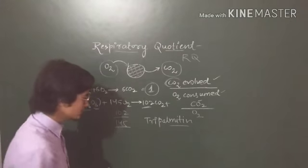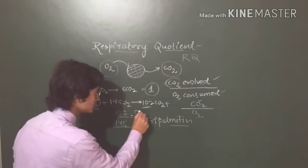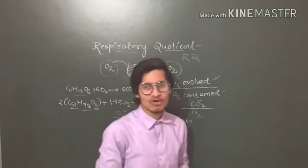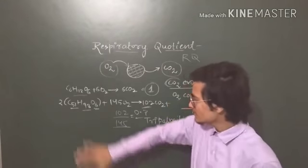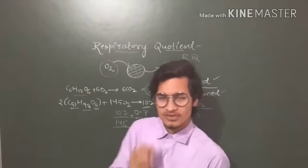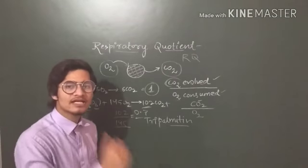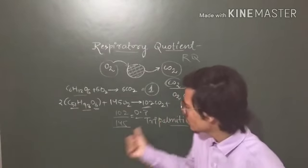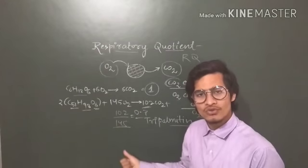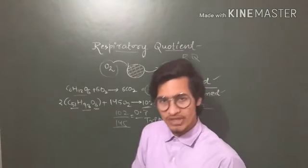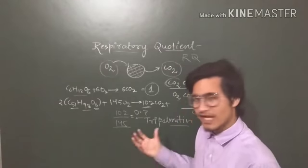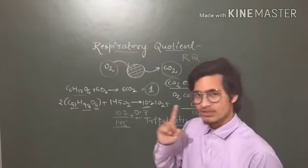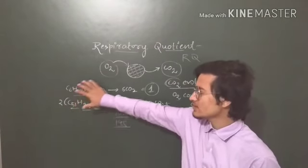In this particular case it is 102 by 145, which is something like 0.7. So for fats, the respiratory quotient is less than one. This is the basic example where tripalmitin is reacting with oxygen to give out water, carbon dioxide, and energy. The ratio of CO2 by O2 is nearly 0.7, which is quite less than one. That's why it is not utilized frequently. The most important source for energy is carbohydrates.